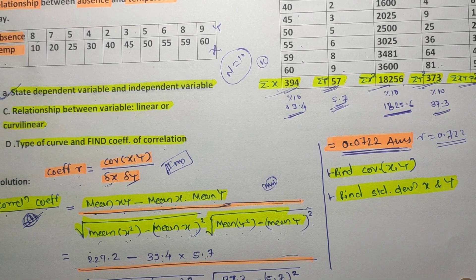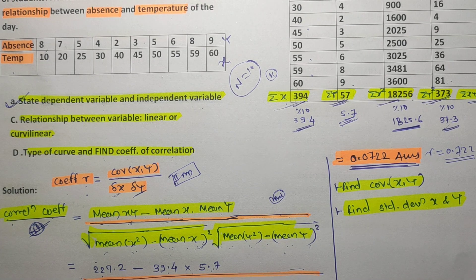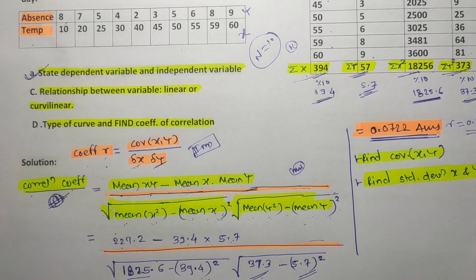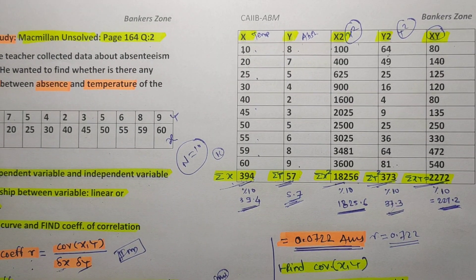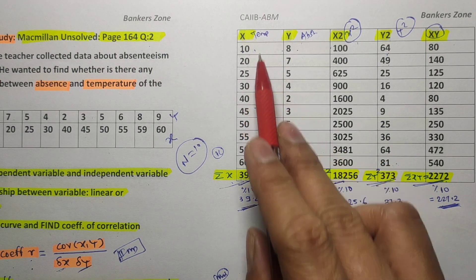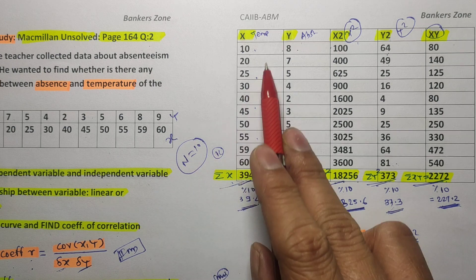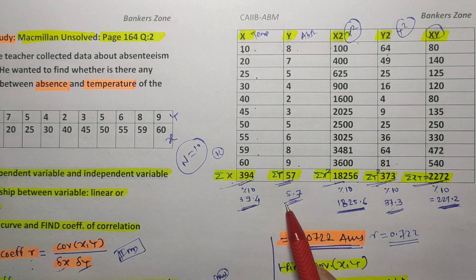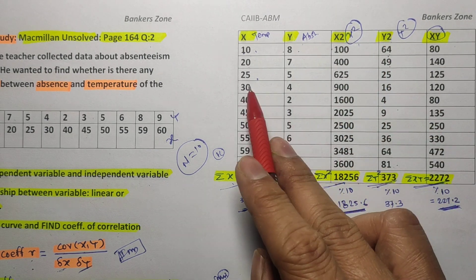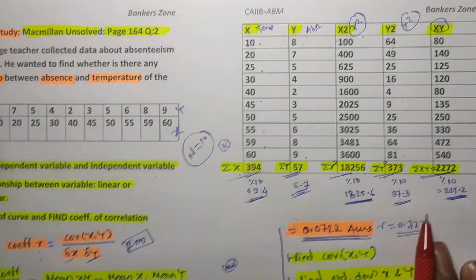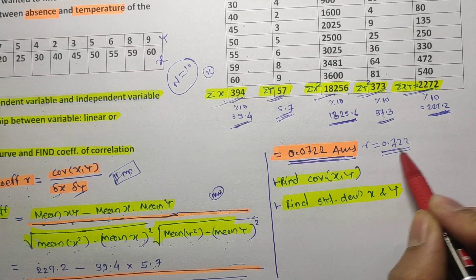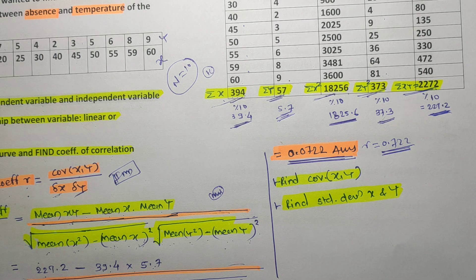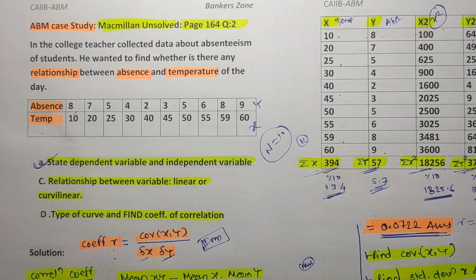This is the easiest way to find the coefficient of correlation. To summarize the steps: write down X, find summation, divide by n for the mean; do the same for Y; calculate X², Y², and XY columns and their means; then substitute all values into the formula and solve with a simple calculator to get r.